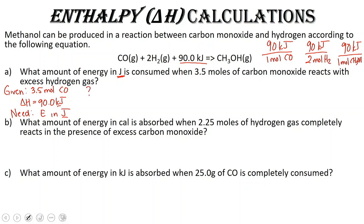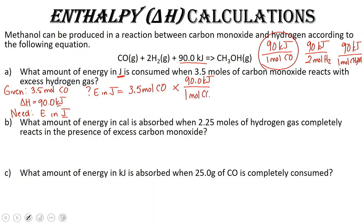We always start with what we're given: 3.5 moles of carbon monoxide. We want to know the amount of energy consumed, so using our kilojoules-per-mole-CO conversion factor, we put 90.0 kilojoules on top and one mole of CO on the bottom. Plugging that into our calculator, we get 315 kilojoules.